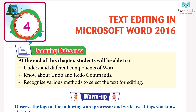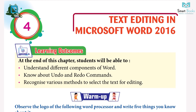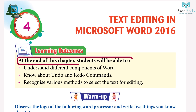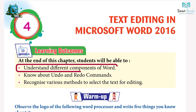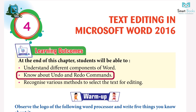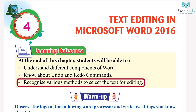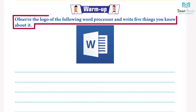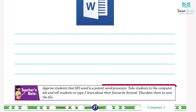Chapter 4: Text Editing in Microsoft Word 2016. Learning outcomes: at the end of this chapter, students will be able to understand different components of Word, know about undo and redo commands, and recognize various methods to select the text for editing. Warm-up: observe the logo of the following word processor and write five things you know about it.